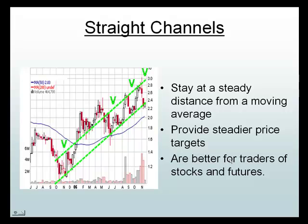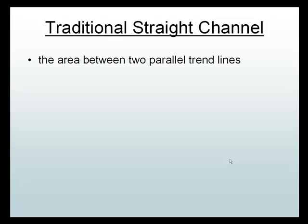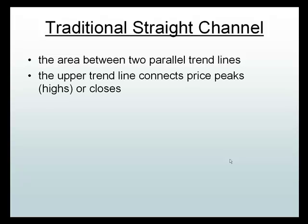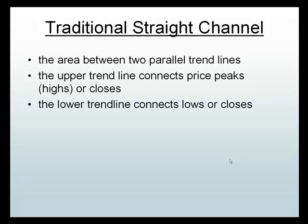Straight channels are considered best for futures traders and stocks because they're good for less volatile times. The area between those two parallel trend lines is what consists of the channel. Many times we use the upper trend line by connecting the highs — or the close of highs — and we use the lows to draw the lower trend line.